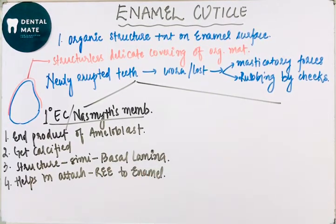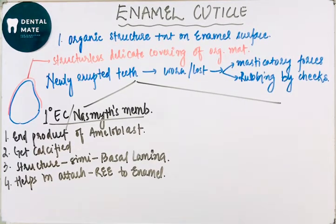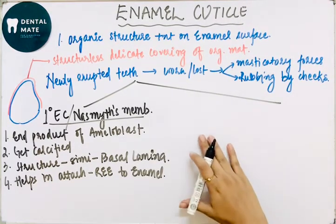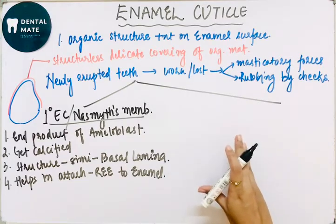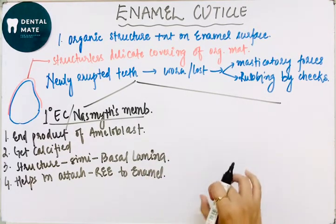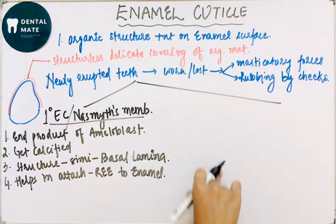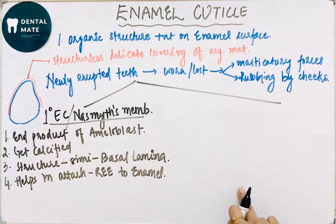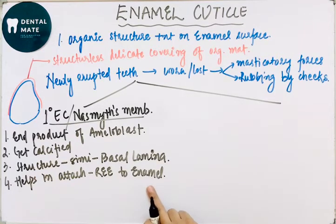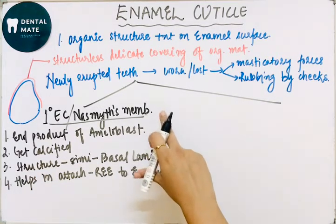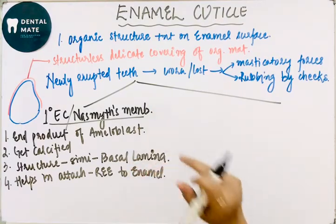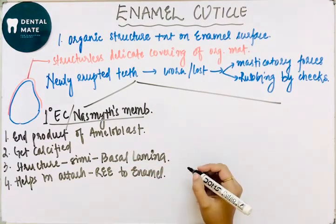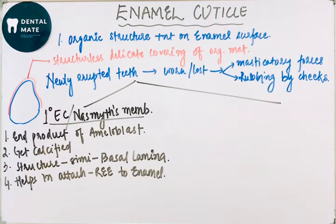During tooth eruption, the cells and oral ectoderm degrade and dissolve the covering. This process helps to attach the primary enamel cuticle, also known as Nasmyth's membrane, to the enamel surface.